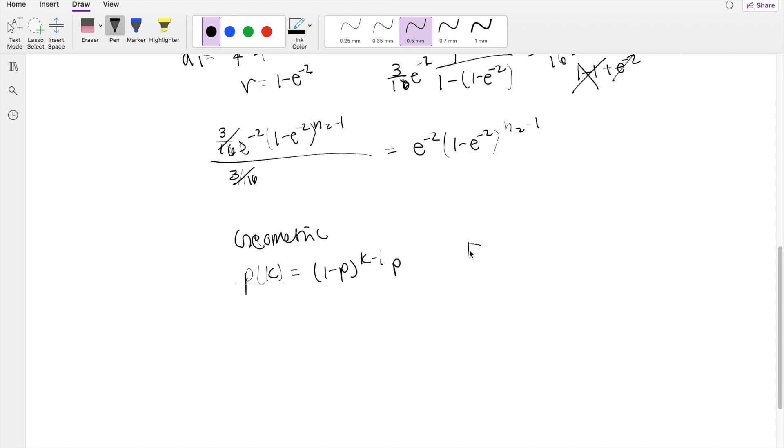And for our geometric distribution, our x is going to be 1 over p, so knowing this, our function exactly follows this rule, right, like 1 minus e to the negative 2, N2 minus 1 times e to the negative 2.